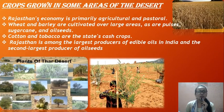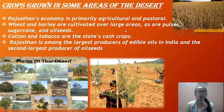Now let's talk about the crops grown in the desert area. Rajasthan's economy is primarily agriculture. Mustard, wheat, and barley are cultivated over large areas, along with pulses, sugarcane, and oilseeds. Cotton and tobacco are the cash crops of the state.